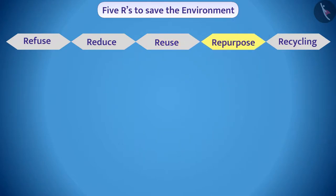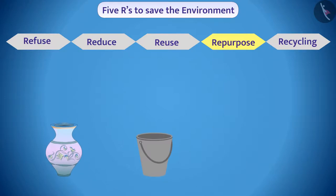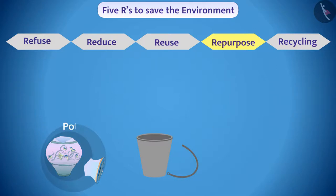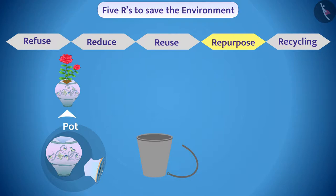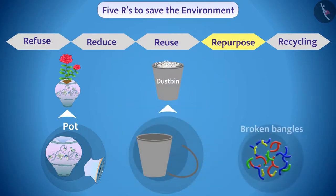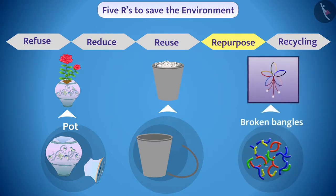Repurpose. Sometimes, things that are purchased for a purpose no longer remain useful for that purpose — for example, a broken pot. Such items can be used for any other useful work. For example, a tree can be planted in a broken pot. A broken bucket can be used as a dustbin. Broken bangles can be used to make decorative items.